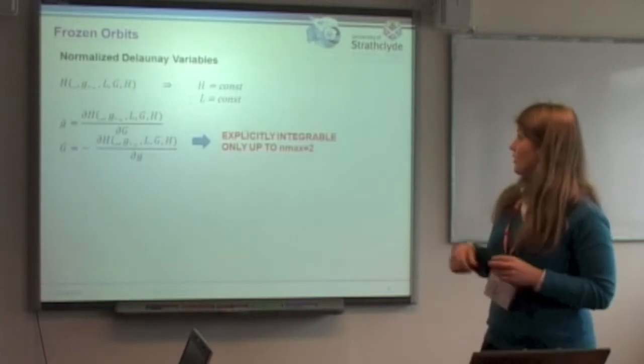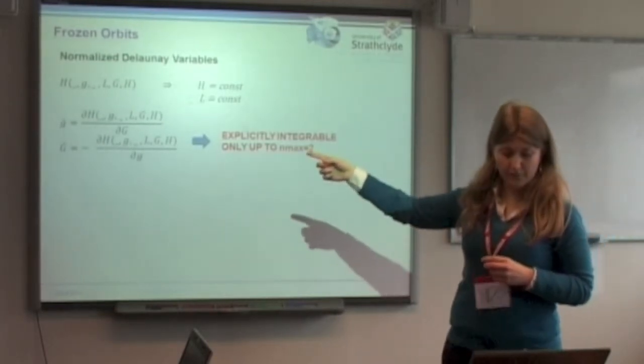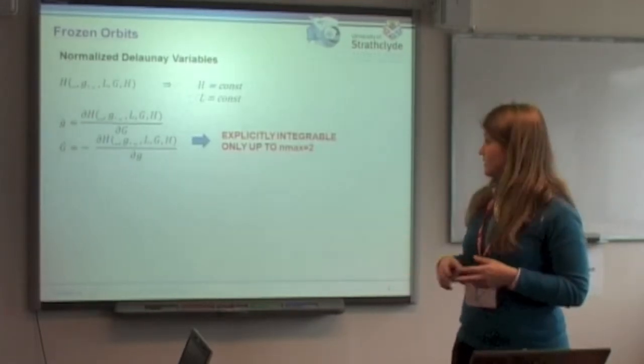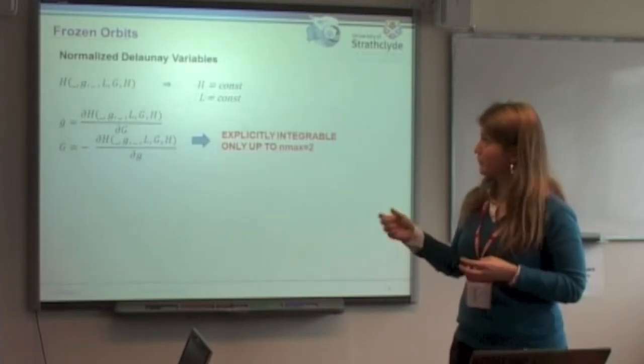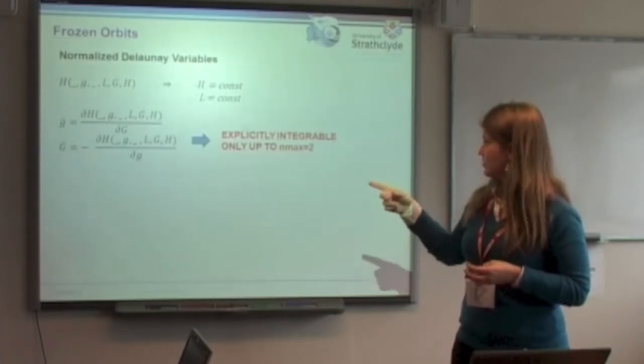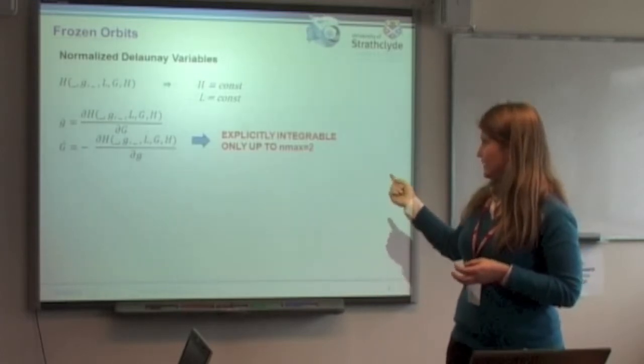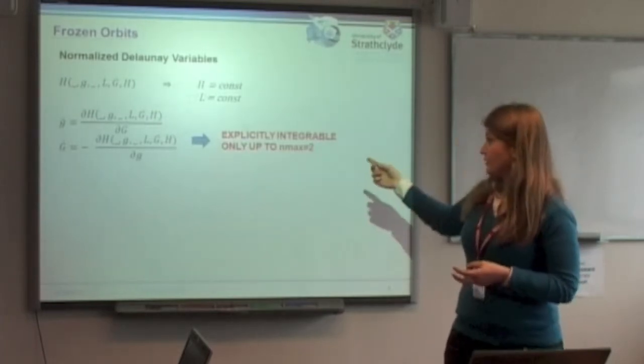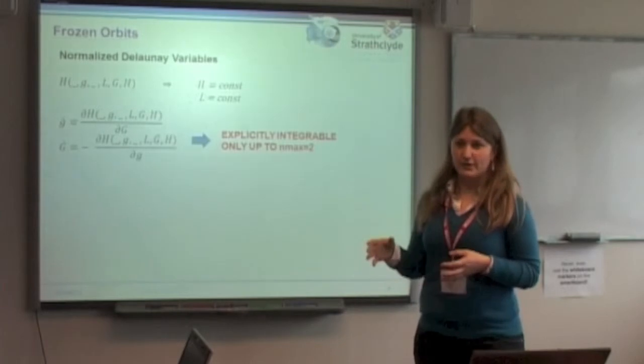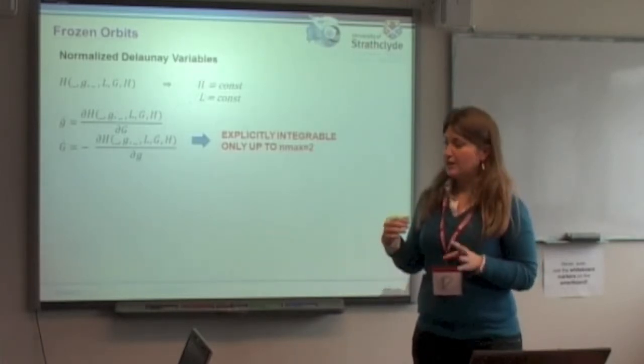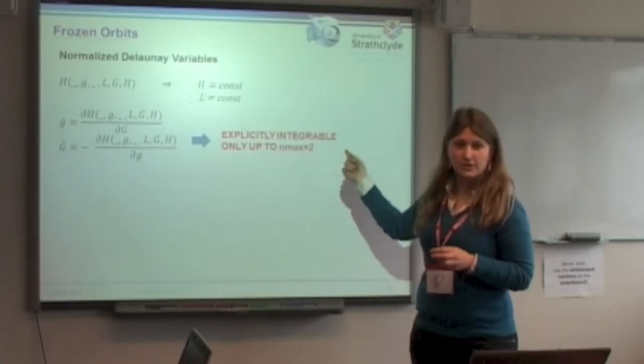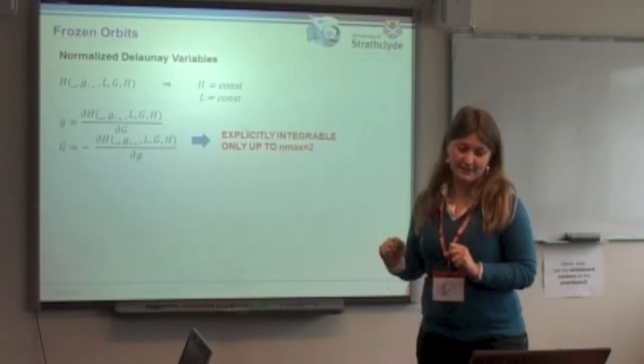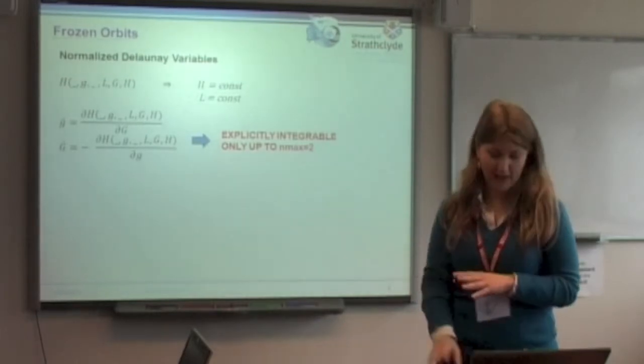We will have two equations, or two motions, depending only on small g, the argument of pericenter, and capital G, and this is explicitly integrable only up to considering only two coefficients. This is important because this is the main difference between our work and the work by Scheeres, which only considering two coefficients has a Hamiltonian which by his own words is trivially integrable, while ours is actually not.